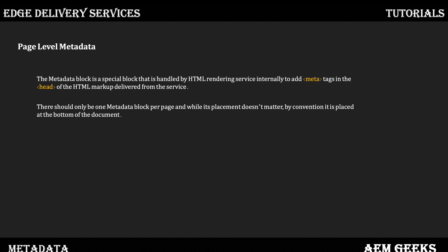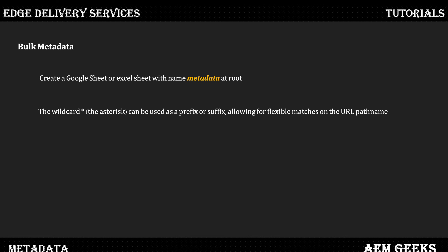For bulk metadata, you create a sheet called 'metadata' — using Google Sheets if you're on Google Docs, or Excel for SharePoint. That sheet should be at the root of your directory and the name must be 'metadata'. Then you define each row with rules about how the metadata applies to your entire site or different sections of your website. Here we use wildcards, which can be used as a prefix or suffix, and we'll see that in the demo.